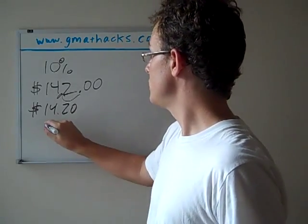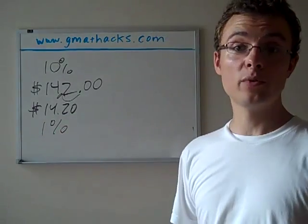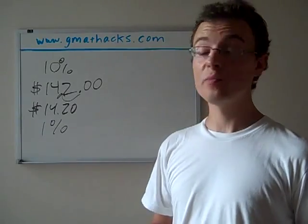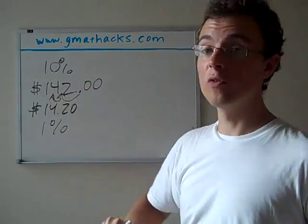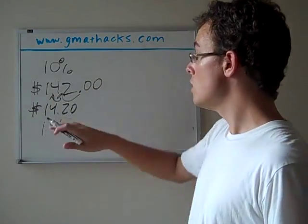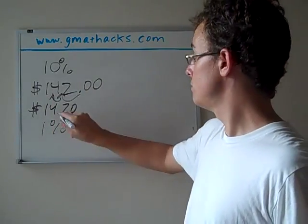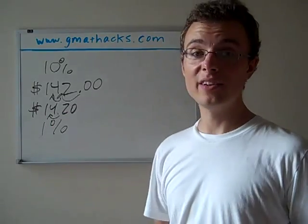The next step, also pretty easy, is 1%. You can probably figure out where to go from that too. If you were starting with $142, you just move the decimal point over one more. It's $1.42. Or if you're starting with a 10% number, you move it over one more, $1.42.